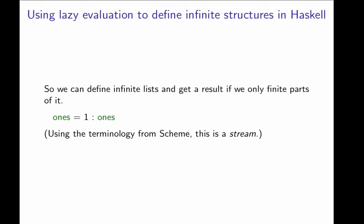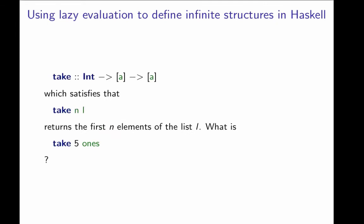So this means that we can define infinite lists and get a result if we only use finite parts of it. For instance, we can define an infinite list of ones. The list ones is 1 cons onto ones. If we remember the terminology from Scheme, what we're really defining here is a stream. And since we're assuming lazy evaluation, whenever we only need a finite part of an infinite structure, we can find that using lazy evaluation because we only evaluate as much as we need.